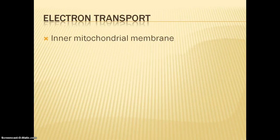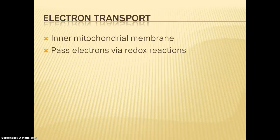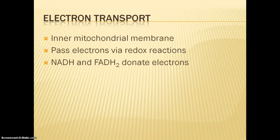The electron transport chain is composed of proteins and molecules embedded in the inner mitochondrial membrane. They pass electrons from one component to the next via redox reactions. NADH and FADH2 are energy intermediates that donate their electrons at different points in the chain. The final electron acceptor, as we know, is oxygen.